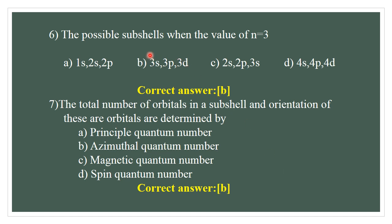The possible subcells when N equals 3: for N = 3, the azimuthal quantum number L = 0, 1, 2. Therefore the possible subcells are 3S, 3P, and 3D. The correct option is B.